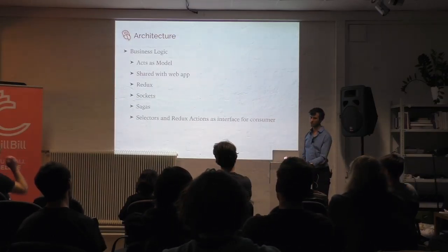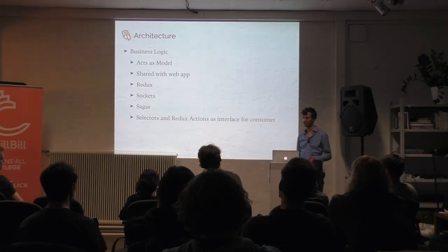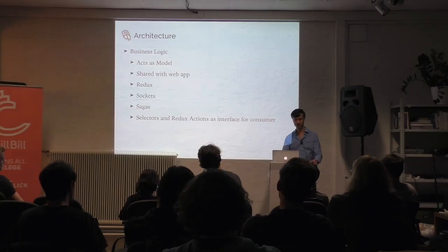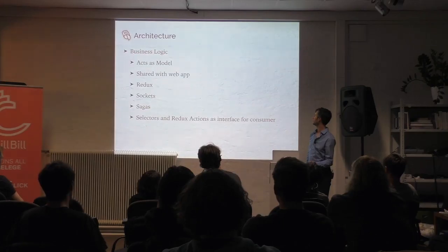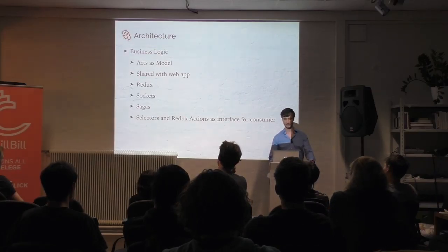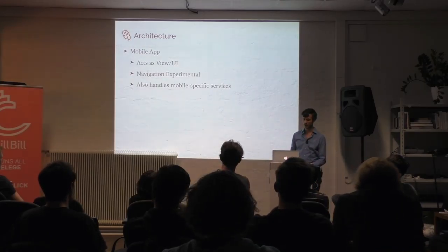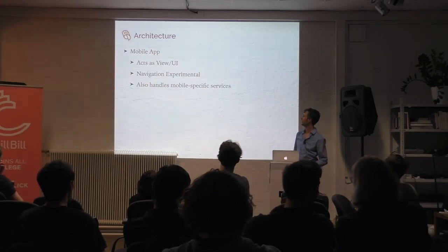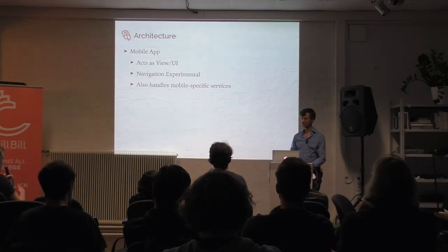The business logic is responsible for organizing and formatting the core data of the app, and it makes it easy to be consumed. We use Redux, we use Sockets to communicate with the server, and we use Sagas. The interface for the web app and mobile app as consumers uses Selectors and Redux Actions. The mobile app repo acts as the view — we use Navigation Experimental — and it's also in charge of handling some mobile-specific services like analytics and push notifications.